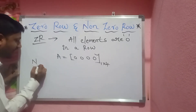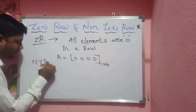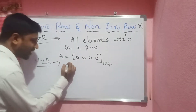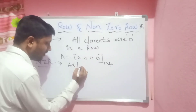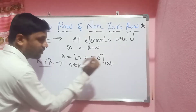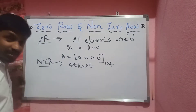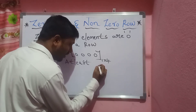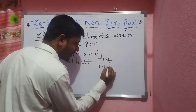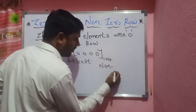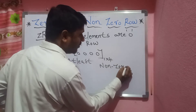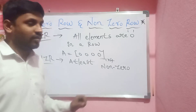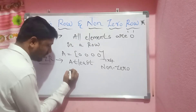Next, non-zero-row. When is it non-zero-row? If at least one element is a non-zero element, it is called a non-zero-row.